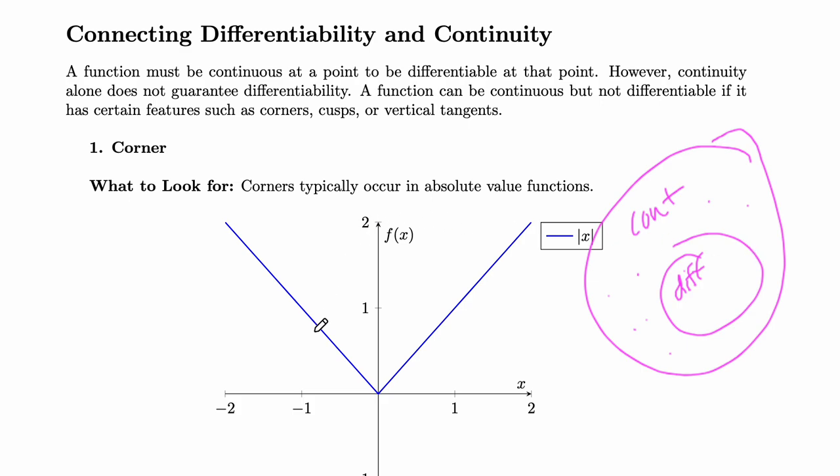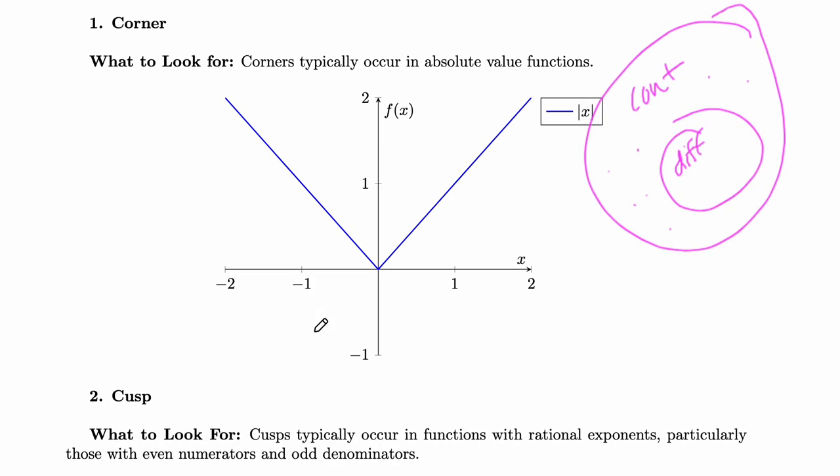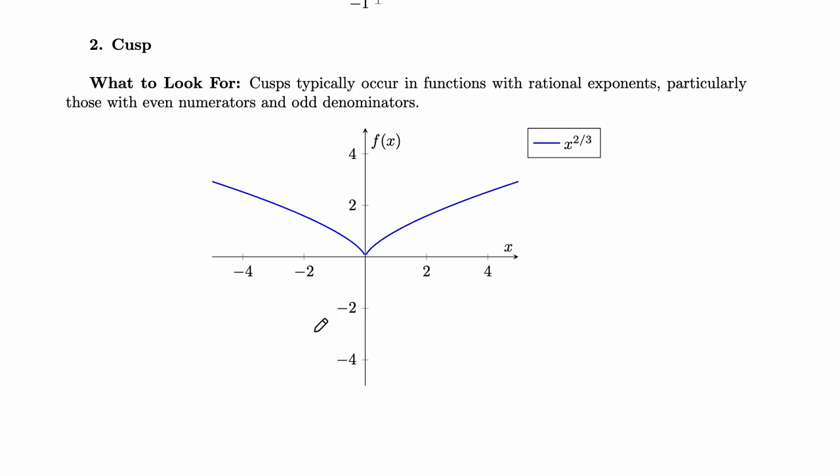All right, so some things to look for, or some cases of functions that are continuous but are not differentiable. One, corners. Pay special attention to this in absolute value functions. Two, cusps. You'll see this frequently with rational exponents or functions with rational exponents. So I like to think of this as kind of like a little bird or kind of having bird wings.